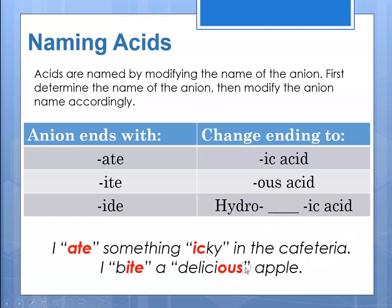To keep this straight, there's a handy saying: "I ate something icky in the cafeteria" — reminding yourself that "-ate" anions form "-ic" acids. And "I bite a delicious apple" — reminding yourself that "-ite" anions form "-ous" acids, where "-ous" is spelled O-U-S.